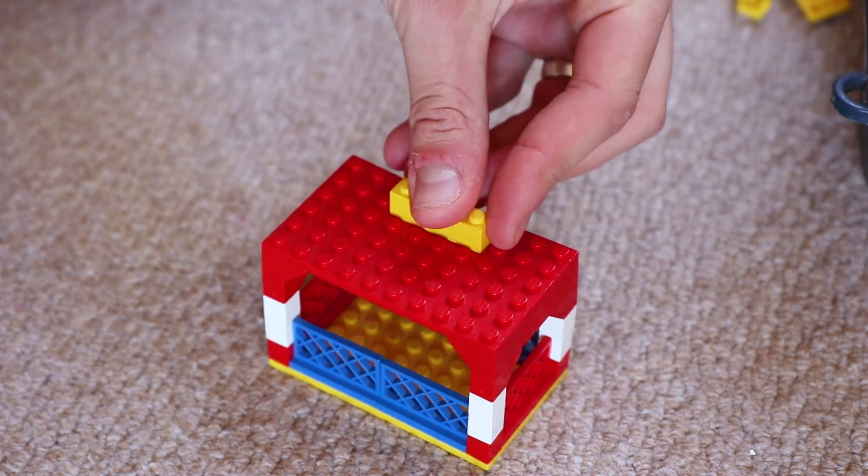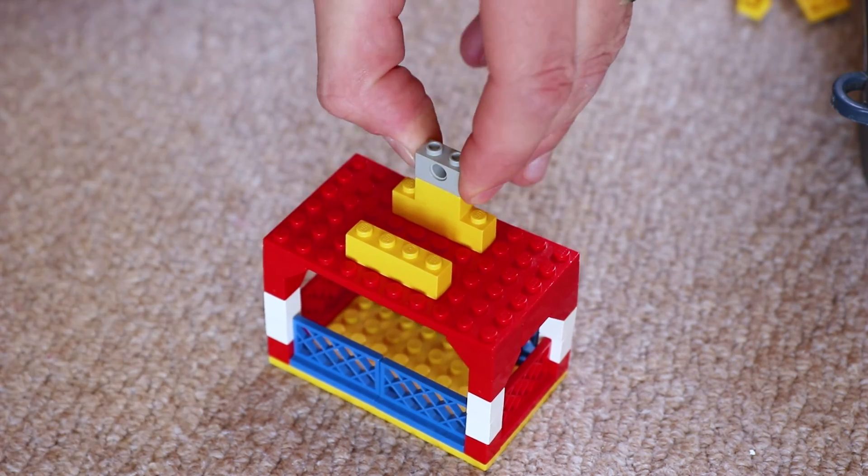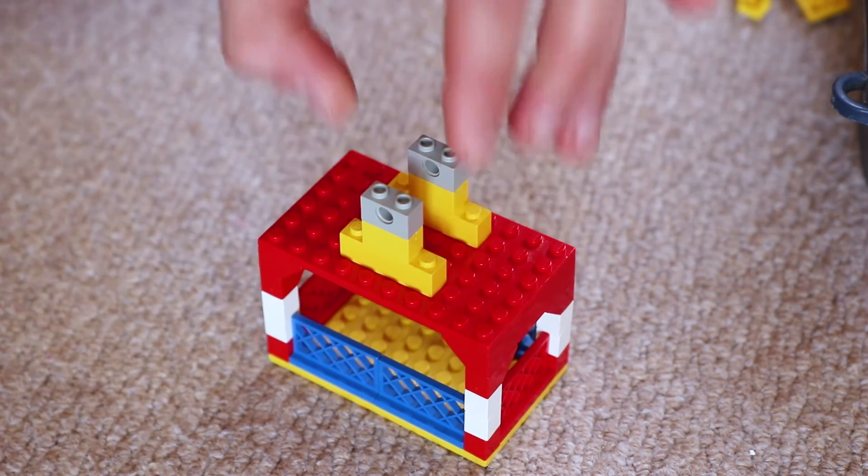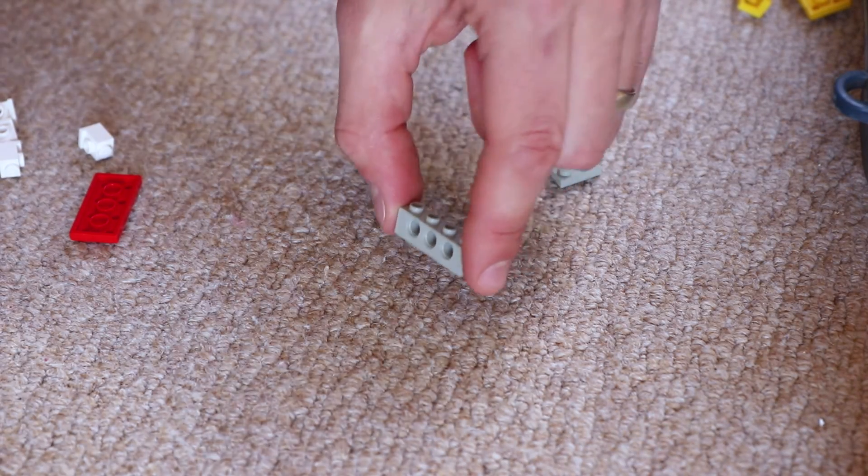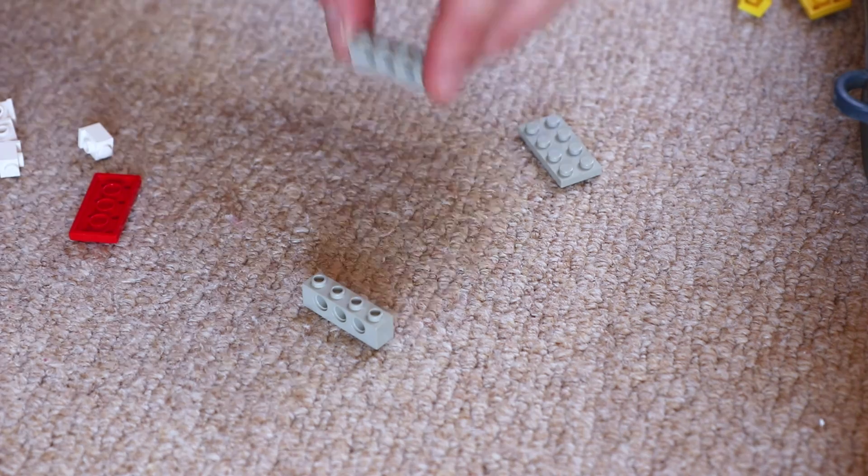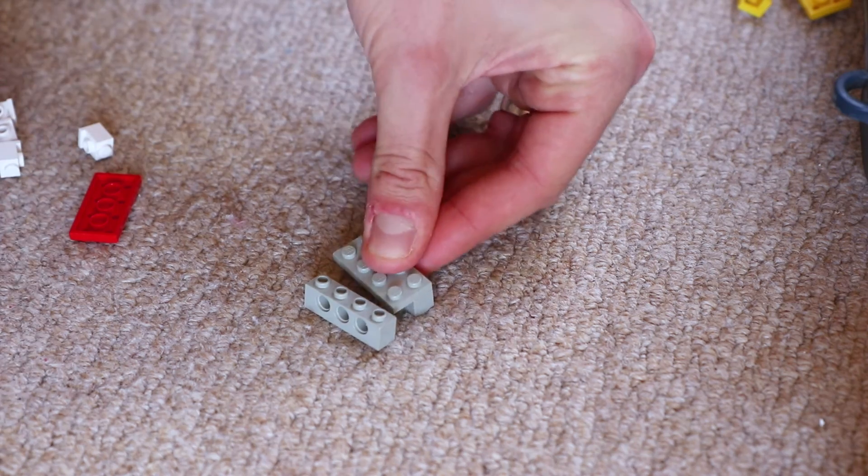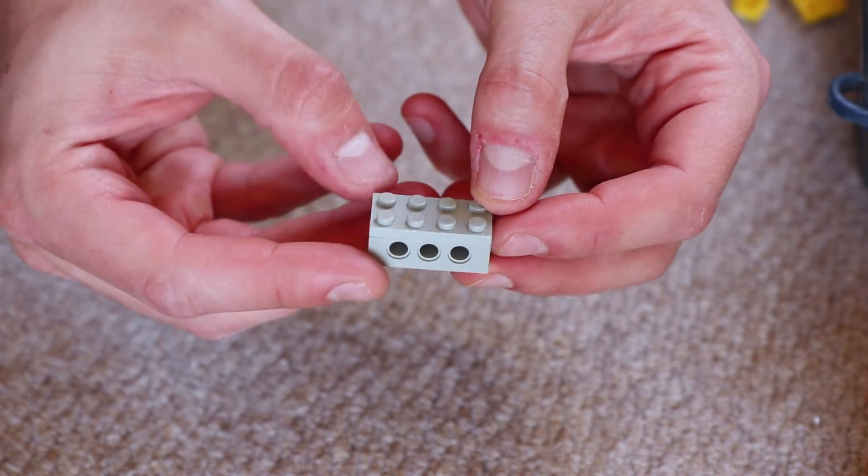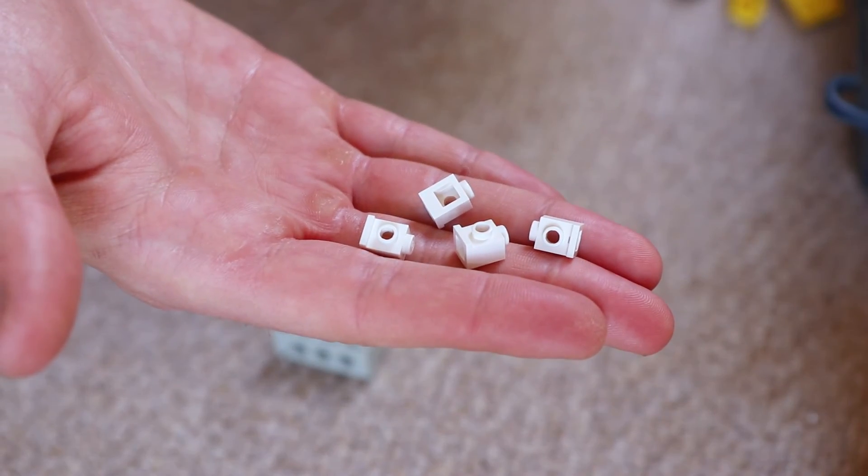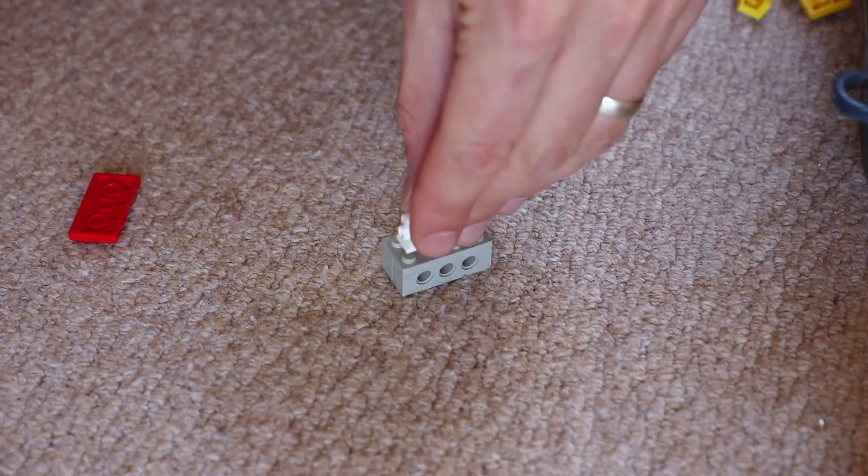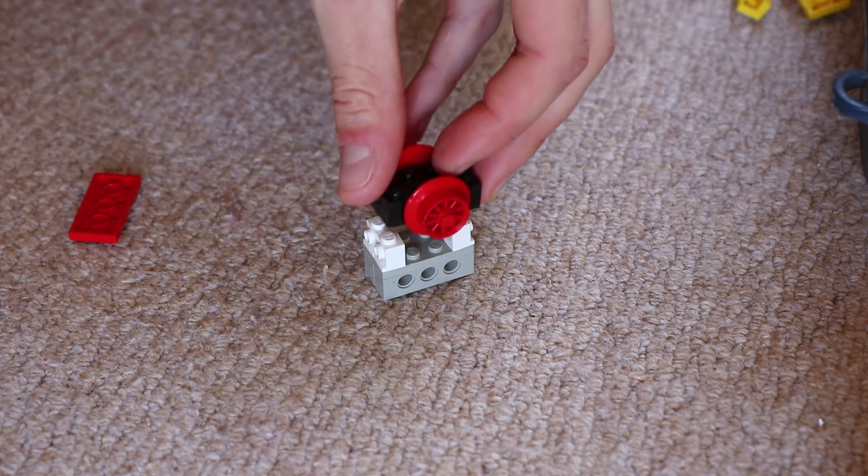We now need to construct the fitting to connect the cable car to the cables but we want to do it so the cable car remains level as it moves up the cableway. To do this, add some raised Technic bricks as shown on top of the cable car. Then we'll construct the part that will attach the cables to the cable car. Take two pieces of Technic bricks and attach them together as shown. Next, take four single knob pieces of Lego and attach them to the top of the Technic bricks. Then place a single wheel on top of these.